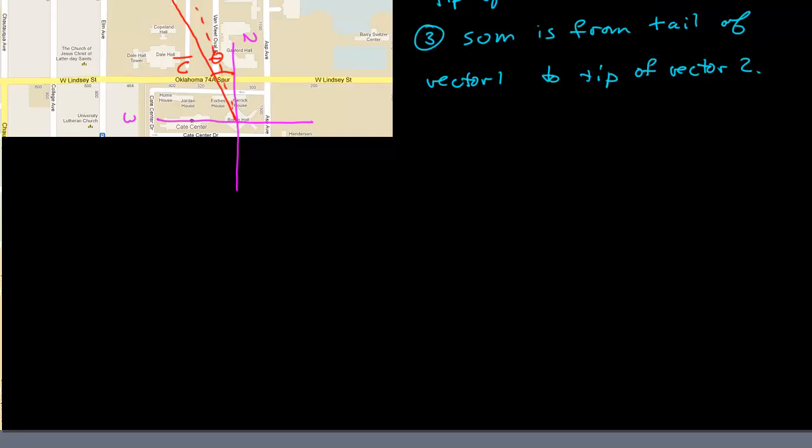Let's do a couple more examples of adding vectors graphically. If I call this vector A and this vector B, if I were to add them together, A plus B, I would take the tail of B to the tip of A by translating. I can translate as long as I don't rotate, because rotate changes the direction. Then the result goes from the tail of A to the tip of B.